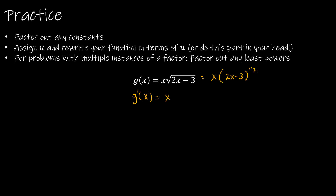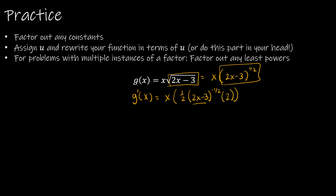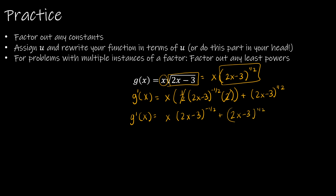The derivative of (2x minus 3) to the one half is one half times (2x minus 3) to the negative one half. The chain rule says the derivative of (2x minus 3) is 2, so that factor comes in. Using the product rule: first times derivative of second, plus second times derivative of first. The derivative of x is just 1. Cleaning up: one half and 2 cancel, giving x times (2x minus 3) to the negative one half, plus (2x minus 3) to the one half. Do not leave your solution like that.